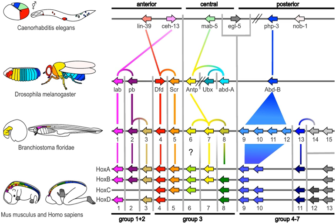The embryologist Karl Ernst von Baer opposed this, arguing in 1828 that there was no linear sequence as in the Great Chain of Being, based on a single body plan, but a process of epigenesis in which structures differentiate. Von Baer instead recognized four distinct animal body plans: radiate like starfish, molluscan like clams, articulate like lobsters, and vertebrate like fish. Zoologists then largely abandoned recapitulation, though Ernst Haeckel revived it in 1866.